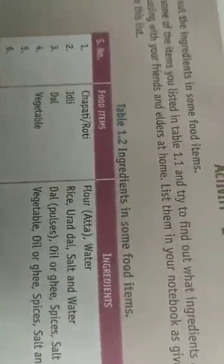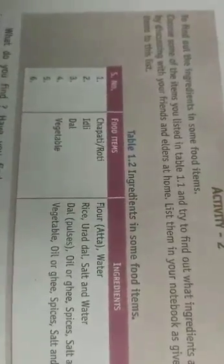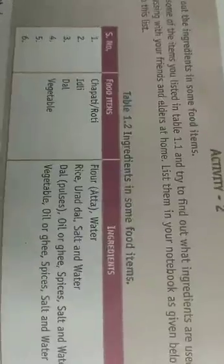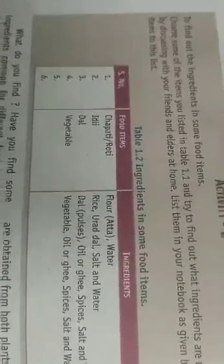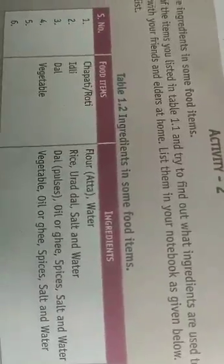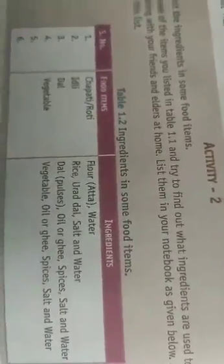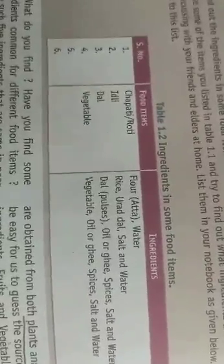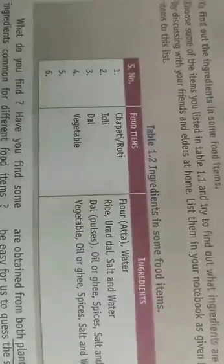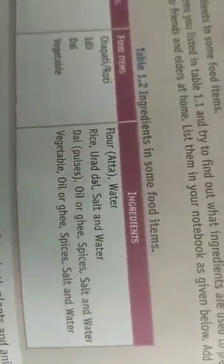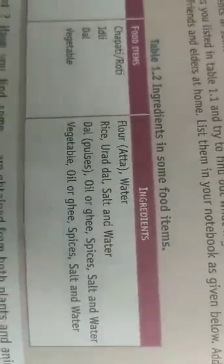Ingredient-based questions are very important from an examination point of view. Dal — pulses — the major source of proteins. For dal, the ingredients are: pulses, oil or ghee, spices (masala), salt, and water. For vegetable curry: any vegetable — carrot, cauliflower, cabbage — oil, ghee, spices, masala, salt, and water.